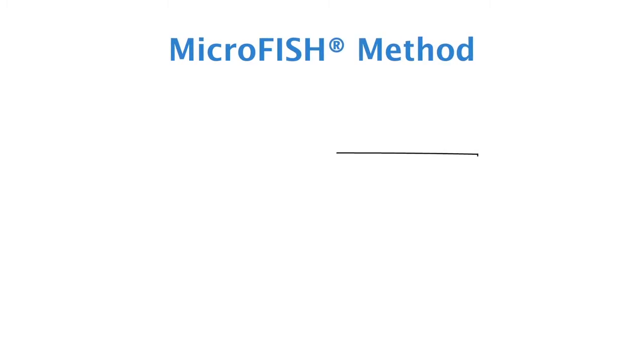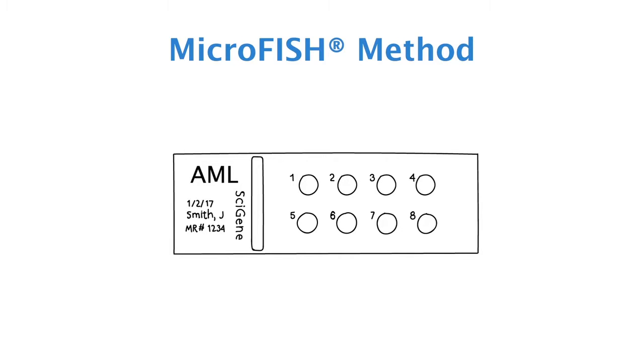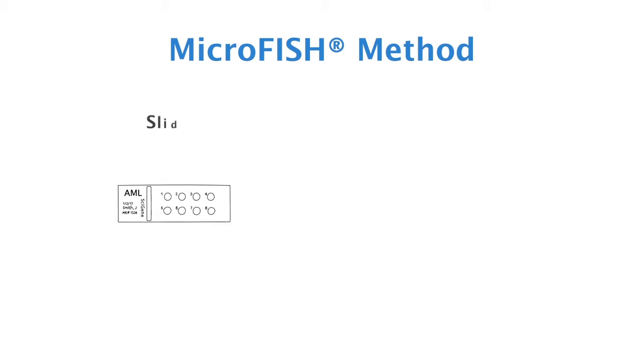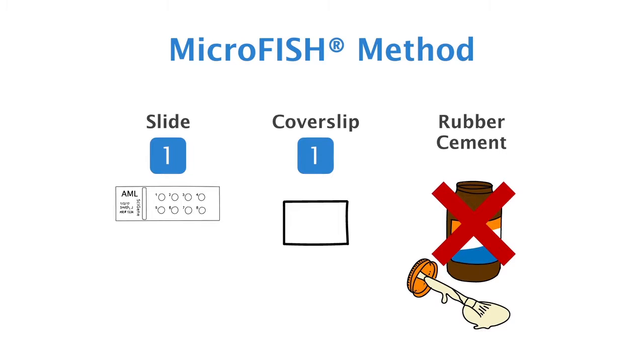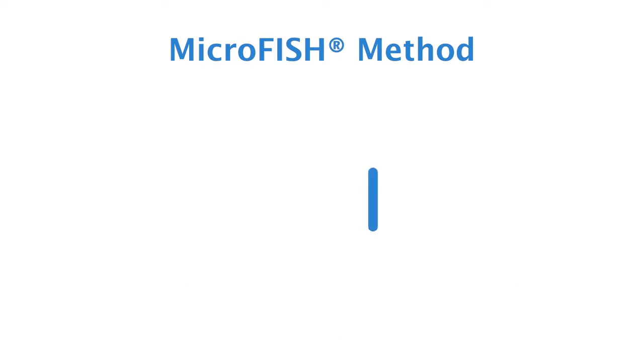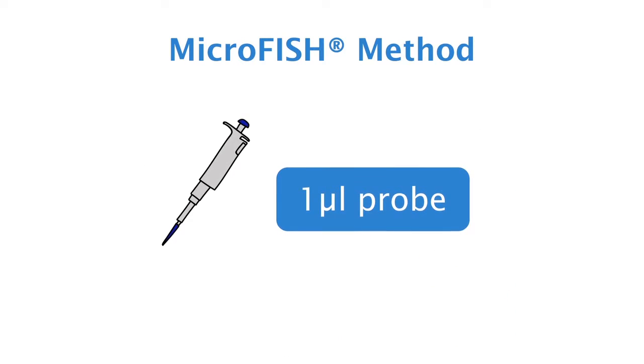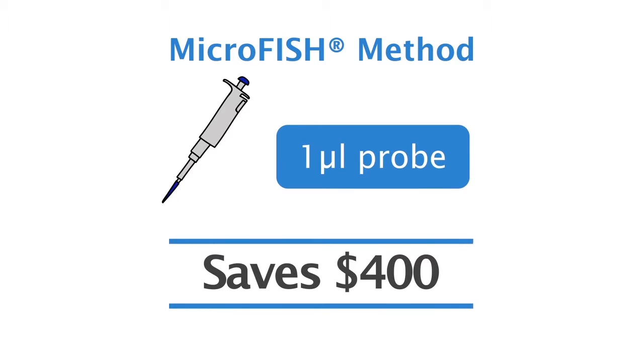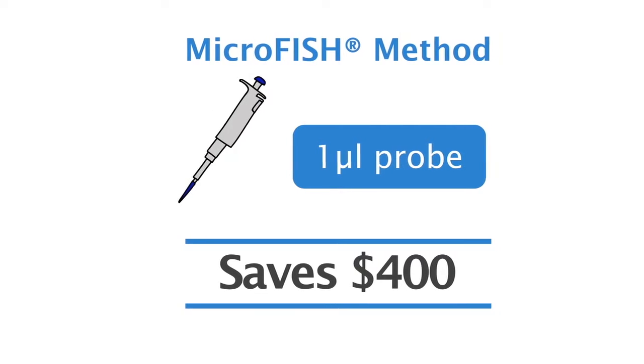Now, with the Microfish method, technicians can set up panels of up to eight probes using just one slide and cover slip without rubber cement. Microfish slides need just one microliter of probe per well, so labs save as much as $400 in reagent costs per panel. Large laboratories can easily save a million dollars a year in operating expenses.